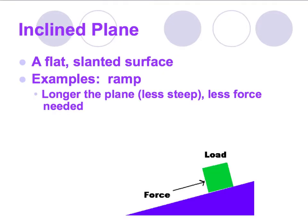The first simple machine is the inclined plane — probably the simplest of all of them. It's a flat, slanted surface, and the best example is a ramp. The longer the plane is, the less steep it tends to be, which means less force is required to move a load up it. You may have experienced this helping someone move or using ramps next to stairs outside buildings.